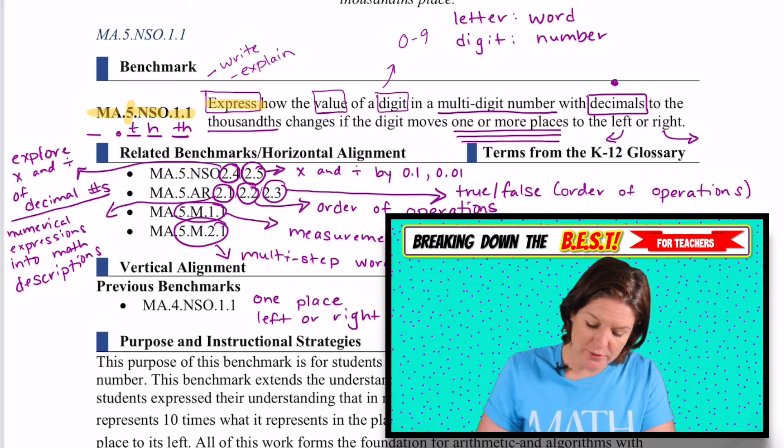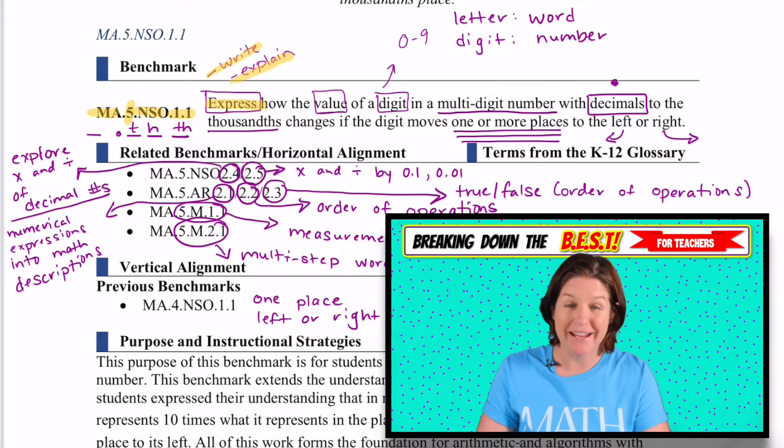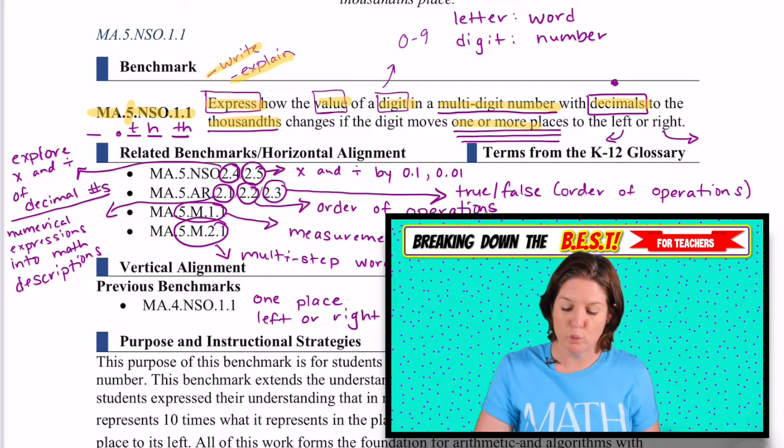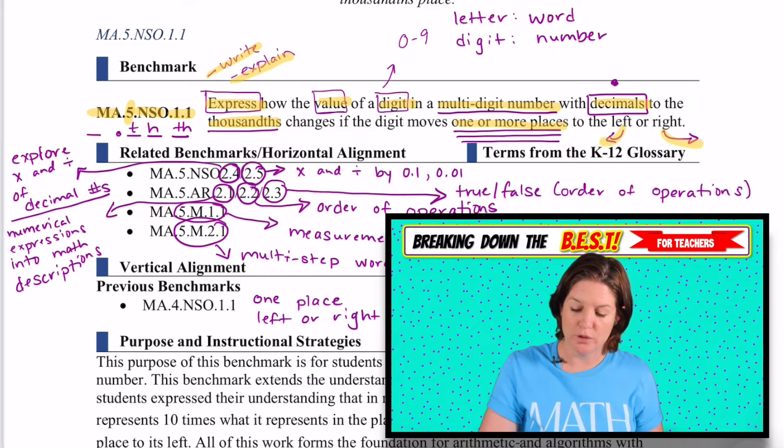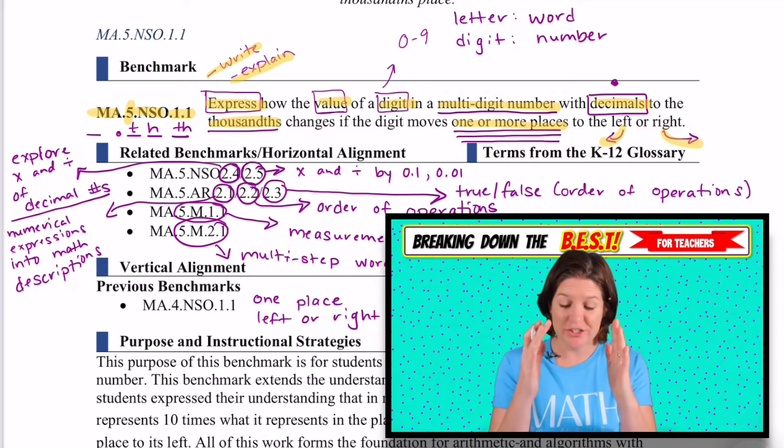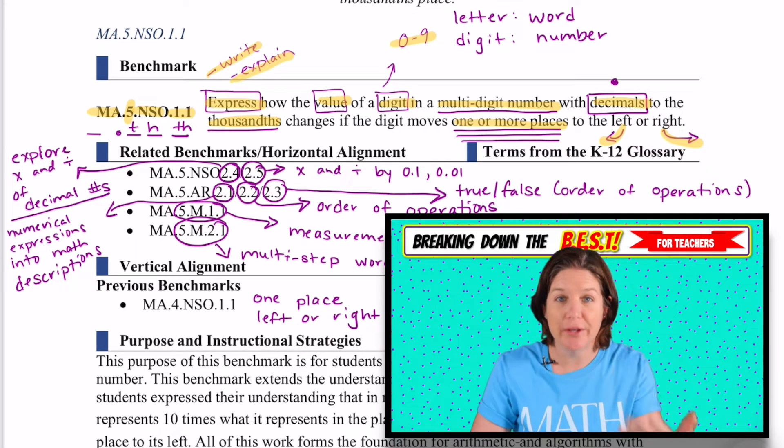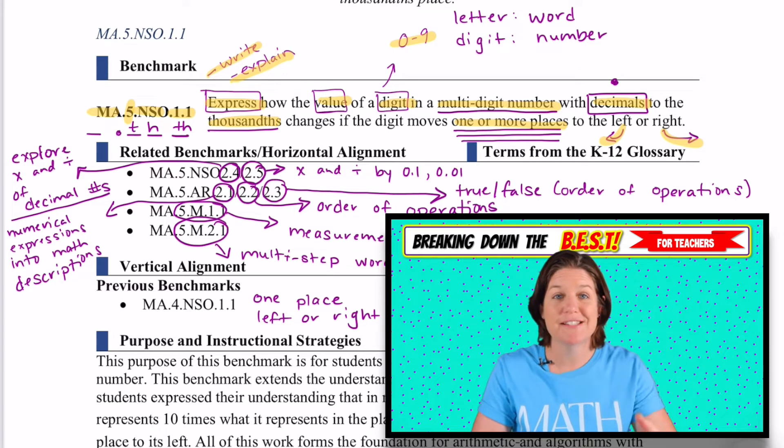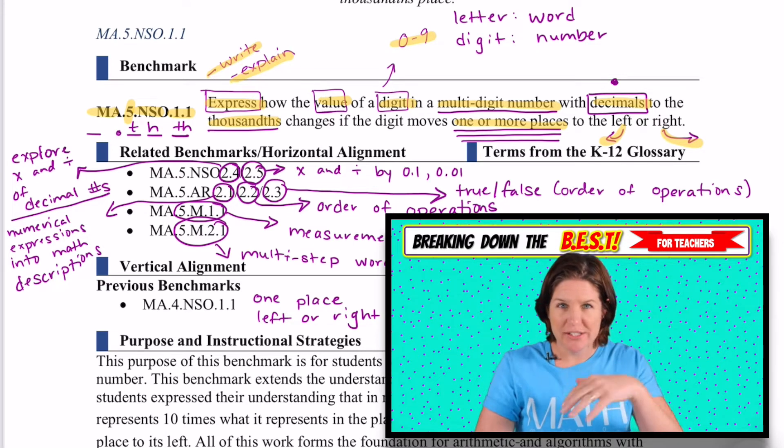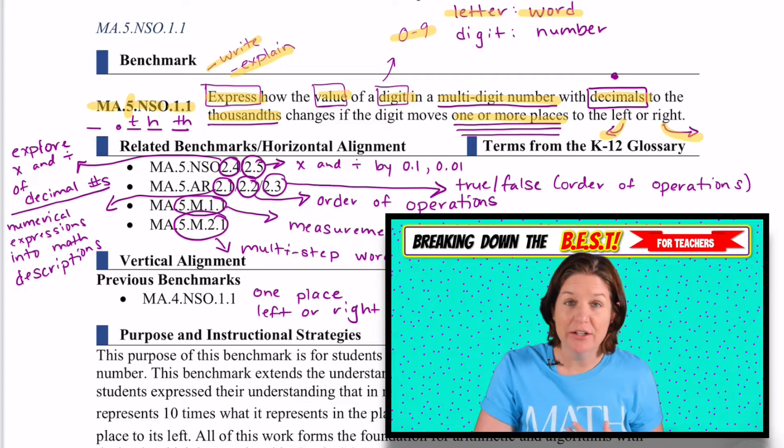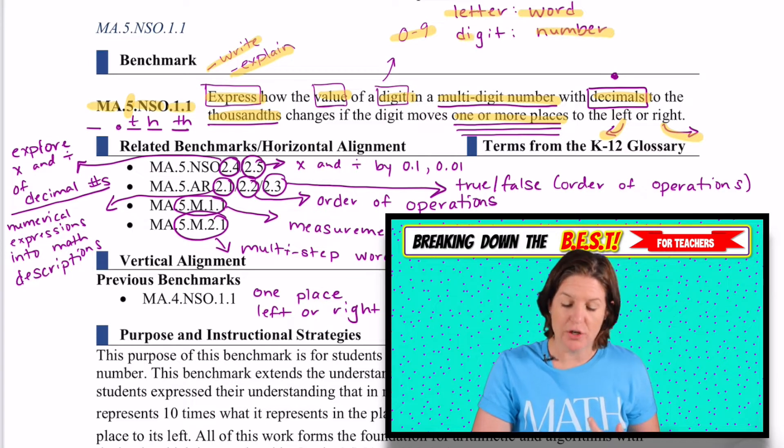This one says to express, which means either writing or explaining how the value of a digit in a multi-digit number with decimals to the thousandths changes if the digit moves one or more places to the left or to the right. So we're going to be focusing on digits. And first of all, digits are numbers that are zero through nine, a single number. And when you were thinking of digits, helping our students to understand what a digit is, just like words are made up of letters, numbers are made up of digits.